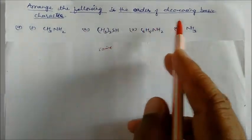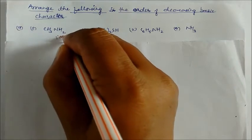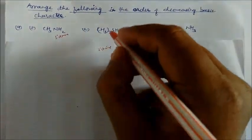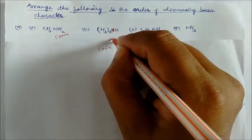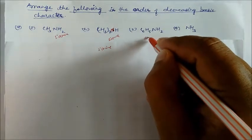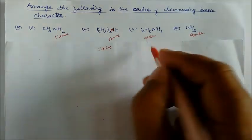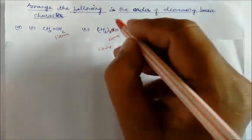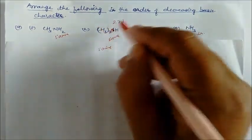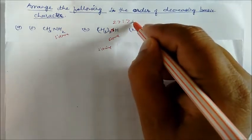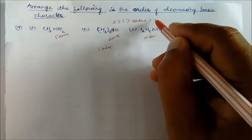Arrange the following in the order of decreasing basic character. We have a primary amine, a secondary amine (NH), aniline, and ammonia. The order of basicity is: secondary amine is greater than primary amine, followed by ammonia, and then aniline, which is the least basic.